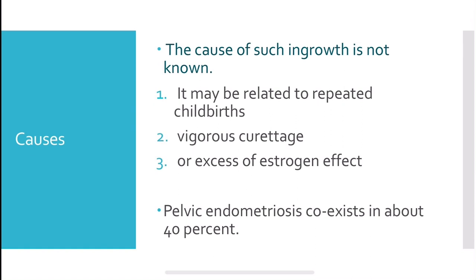Excess estrogenic effect — a hyperestrogenic state — can also lead endometrial tissue to grow into the myometrium. Pelvic endometriosis co-exists in about 40% of cases. Endometriosis is a condition where glands and stromal components of the endometrium are situated outside the uterus, in the pelvis. So adenomyosis and endometriosis are found together in about 40% of patients.